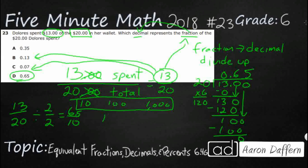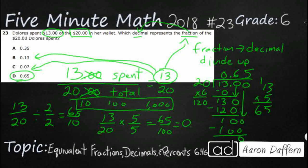Probably what I would do is multiply instead. If we multiply the denominator 20 by 5, we get 100, and we multiply the numerator 13 by 5 as well: 13 times 5 is 65. So we get 65 over 100, which equals 0.65, or 65 hundredths — because this is the hundredths place. So sometimes you can just find a denominator of 100 and read off the answer.